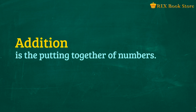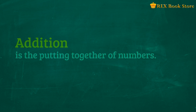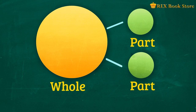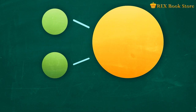Addition is the putting together of numbers. But before we go any further, let's review first what we have learned about number bonds. What are the different parts of a number bond? We have the whole and the parts. Now let's invert the number bond. Can you still name the different parts?